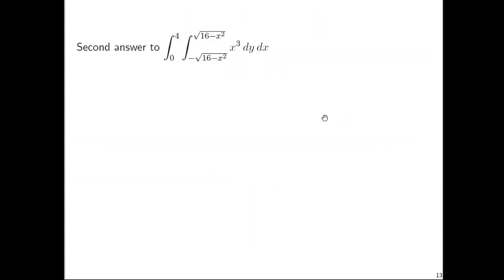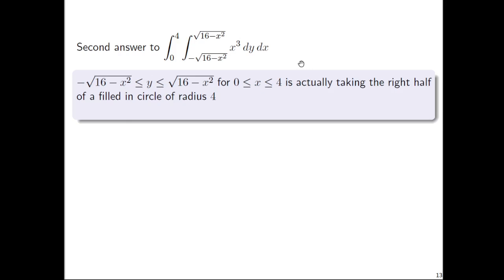So here's a second approach. Instead of doing this integral directly as written, let's notice that the y values go from y = ±√(16 - x²), which forms a circle of radius 4. And x goes from 0 to 4, so we only have the right half. This is really the region we're integrating over: the right half of a filled-in circle of radius 4.